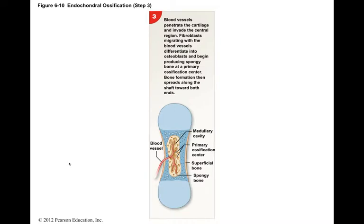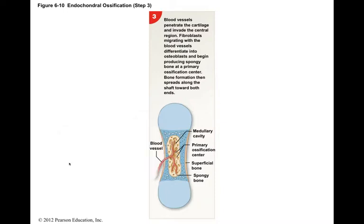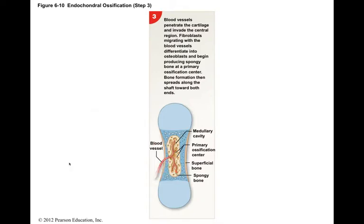While these changes are underway, the blood supply to the periosteum increases, and capillaries and fibroblasts migrate into the heart of the cartilage, invading the spaces left by the disintegrating chondrocytes. The calcified cartilaginous matrix breaks down, and the fibroblasts differentiate into osteoblasts. The osteoblasts will replace the calcified cartilage with spongy bone. Bone development begins at this site and is called the primary ossification center. This bone development spreads towards both ends of the cartilaginous model.